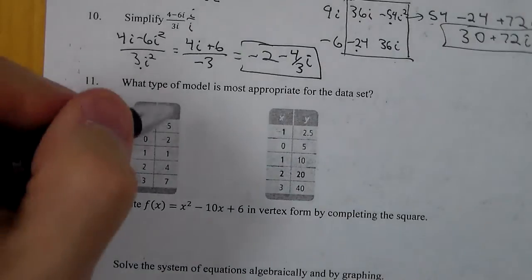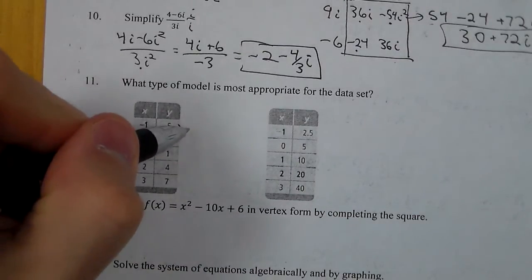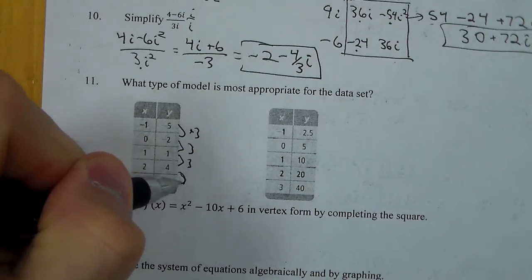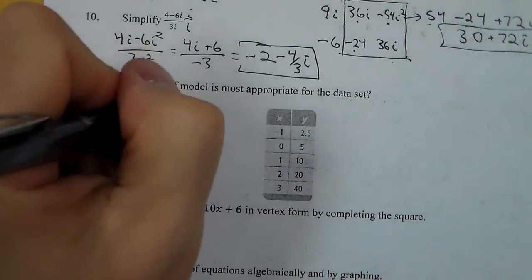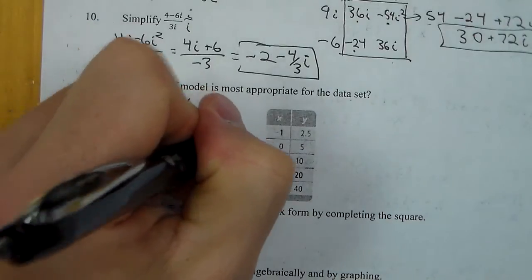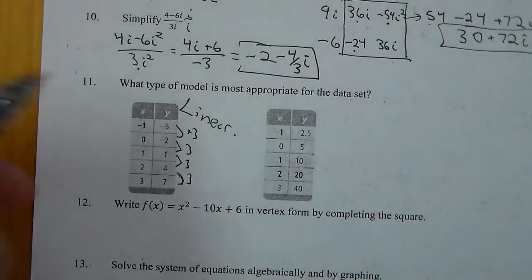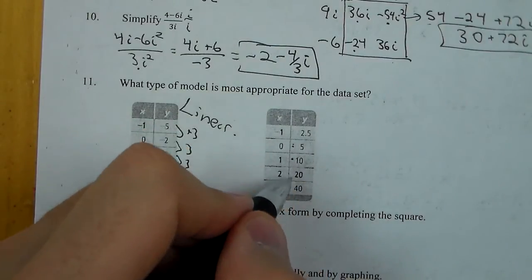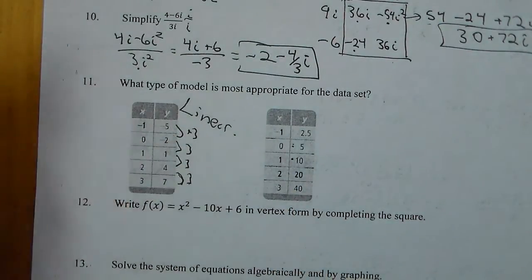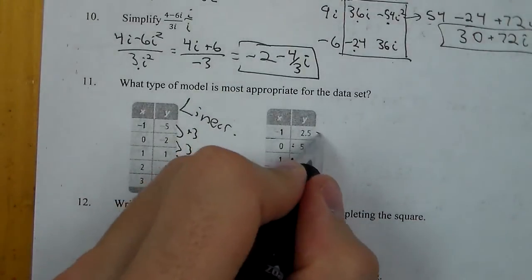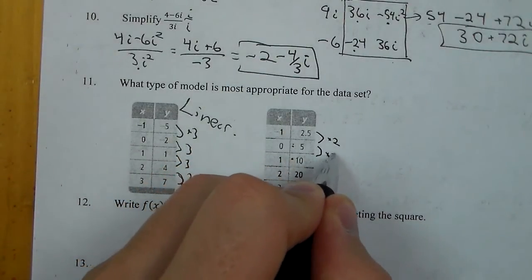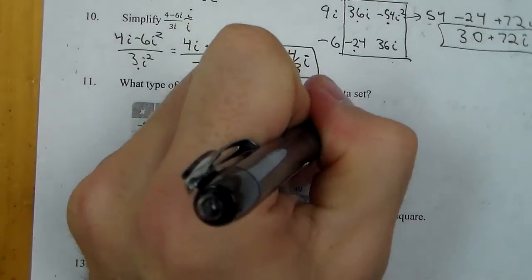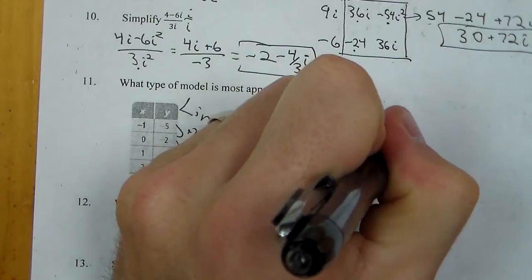For number 11, what type of model do we have for each set? Looking at the first set, it adds 3 each time. If we're always adding the same amount — a constant — we call this a linear function because the slope is 3. For the second set, it went up 2.5, then 5, then 10, then 20. It looks like it's almost doubling each time, and it is in fact being multiplied by 2. When we are multiplying by 2 each time, that is our common ratio, and we call that an exponential function.